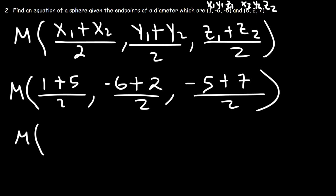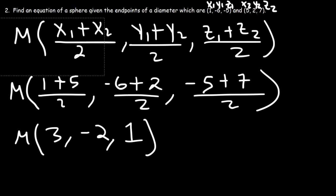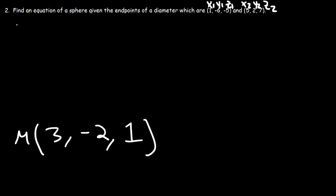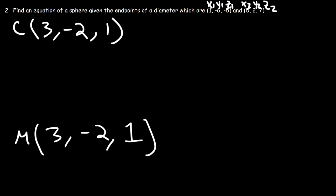Now let's do some math. 1 plus 5 is 6, and divided by 2 that's 3. Negative 6 plus 2 is negative 4, divided by 2, that's negative 2. Negative 5 plus 7 is 2, divided by 2, that's 1. So here we have the midpoint of the sphere, which is basically the center of the sphere — the point 3, negative 2, 1.